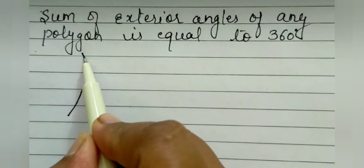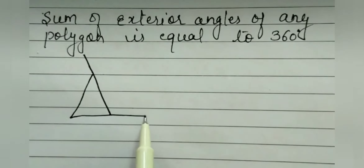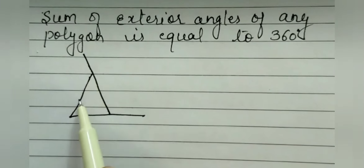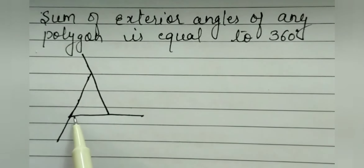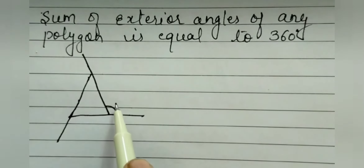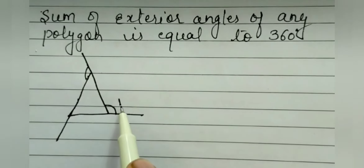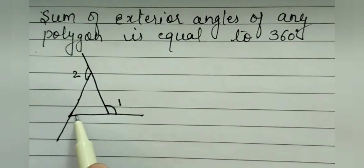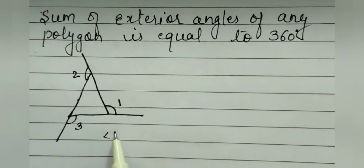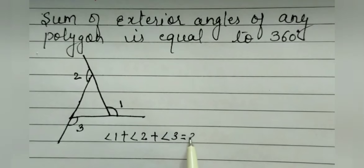Here I am making one triangle and extending the sides in the same order. This side is extended like this, another side is extended like this, and the third side is extended like this. We get three exterior angles of the triangle, named angle 1, angle 2, and angle 3. According to this property, angle 1 plus angle 2 plus angle 3 equals 360 degrees.